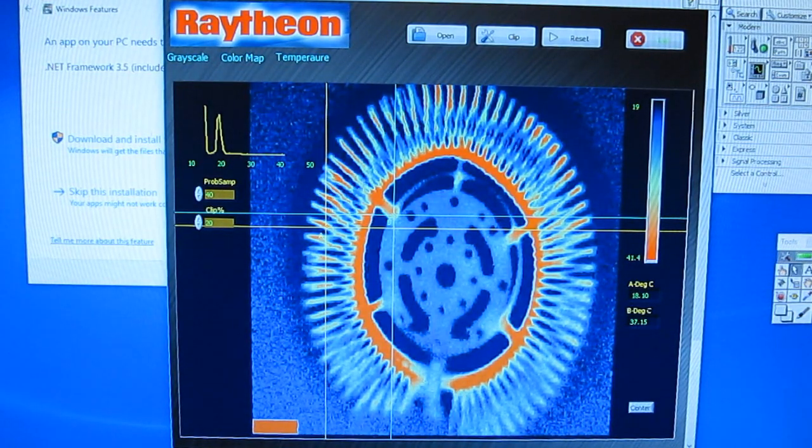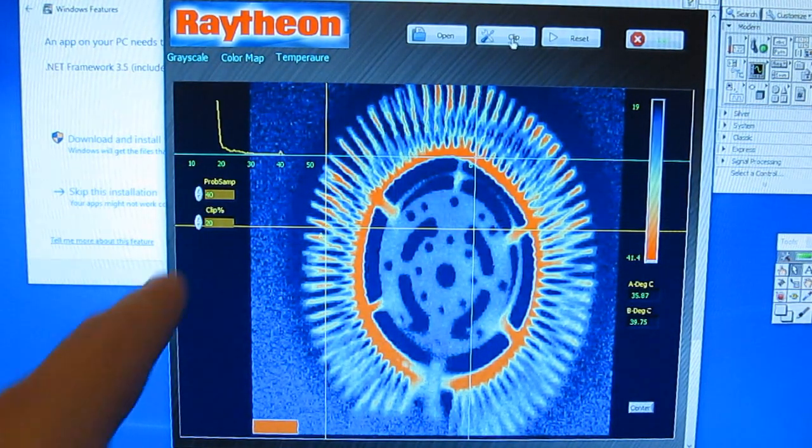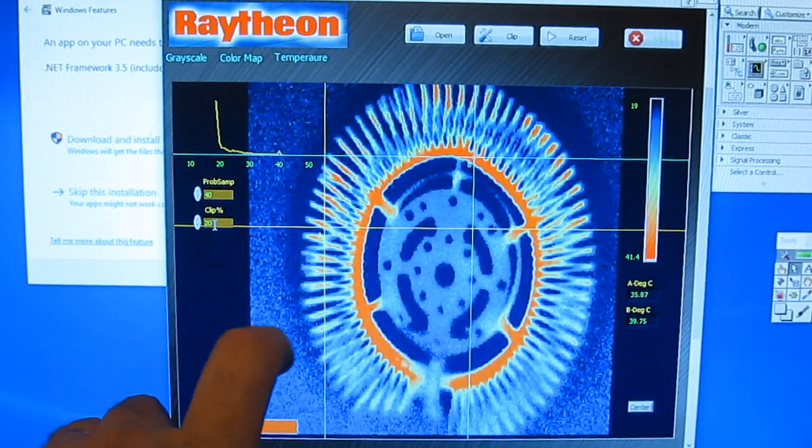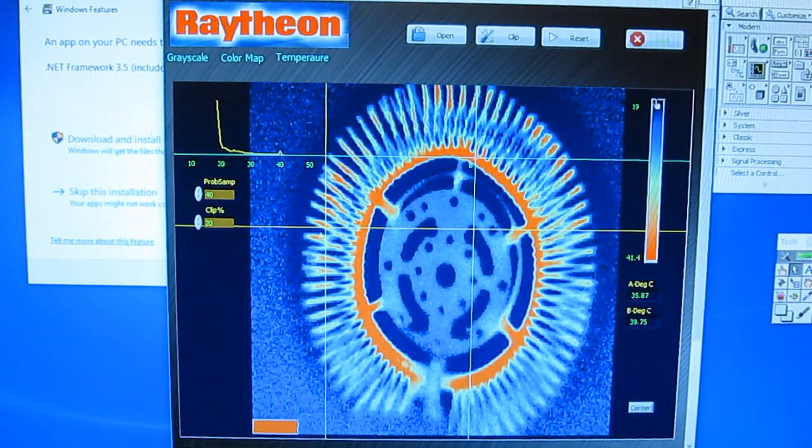This is looking at our heater assembly. You can see I can clip the data. So basically I'm going to take the low 20% and I'm going to set that to the background temperature.